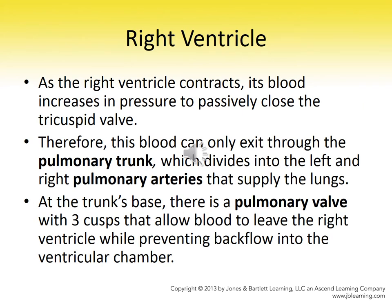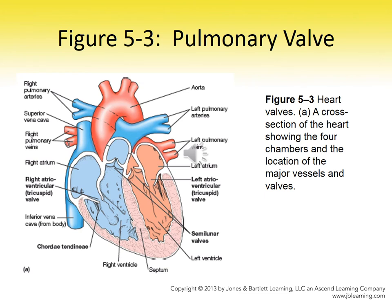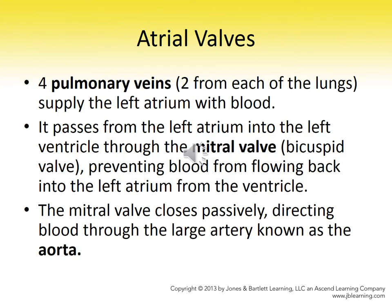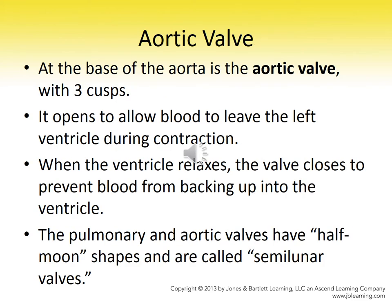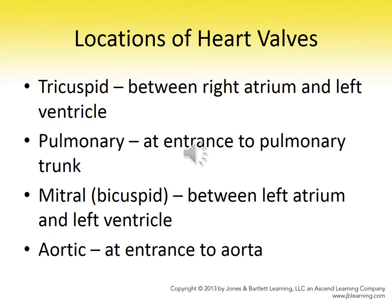The right ventricle contracts and pushes through the pulmonary semilunar valve into the pulmonary arteries, supplying the lungs with blood where oxygen-carbon dioxide exchange takes place. From the lungs, oxygenated blood moves through the pulmonary veins into the left atrium, down through the bicuspid or mitral valve into the left ventricle, and then through the aortic semilunar valve into the aorta. That covers all the valves and where they're located.